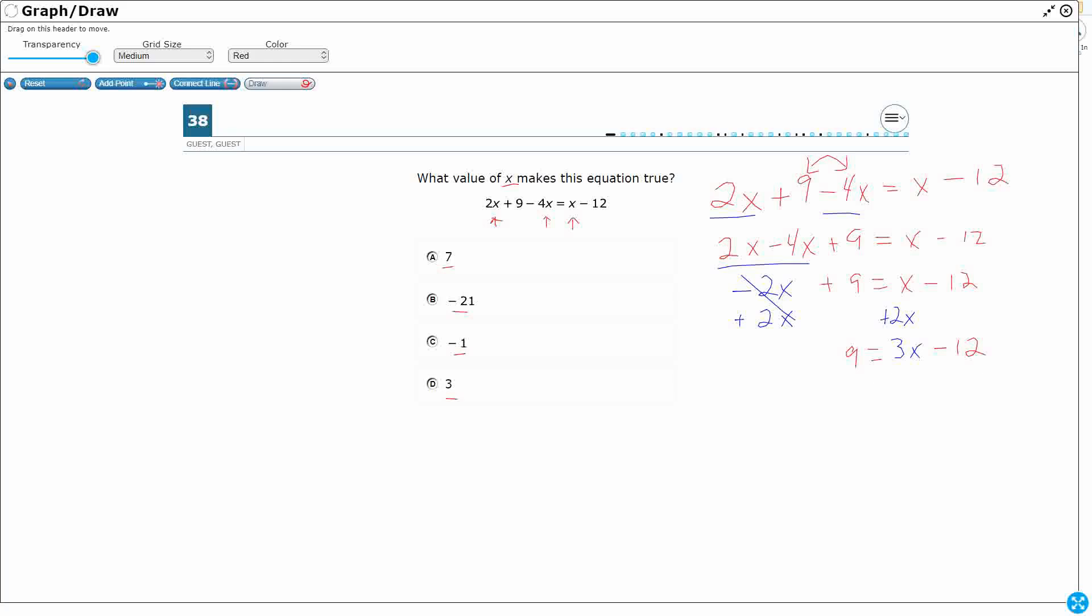Now, I've got a 3x all together on its own, that's fine. I need to get that minus 12 out of there, so I'm going to use the inverse operation. That's going to add 12 to both sides.